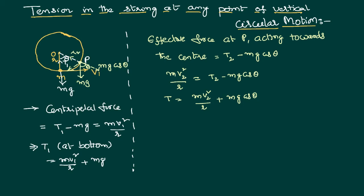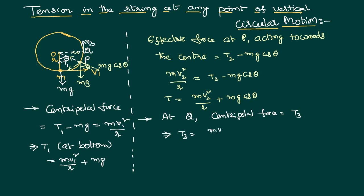Now consider another point Q at the horizontal position. At Q, the only centripetal force acting is the tension T3. There is no component of Mg acting towards the center because Mg acts vertically downward and the point is in a horizontal position. Therefore, at point Q, if the velocity is V3, tension T3 = Mv3² / R.